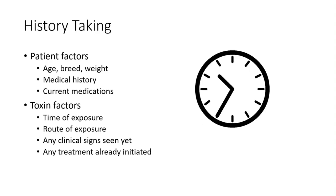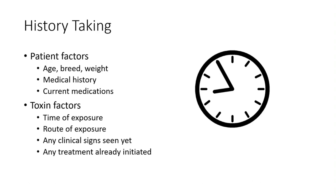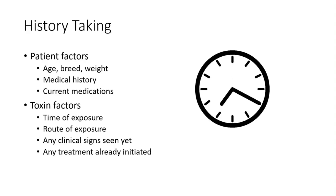When it comes to the actual toxin-specific factors: time of exposure is the obvious one — how long since ingestion affects how we choose to decontaminate. What was the route of exposure — oral or topical? That decides our decontamination process. What clinical signs have we started seeing? That can clue us into how much has been absorbed or how severely they're affected, and gives us some prognostic information. Also, has the owner already started any treatments at home, like hydrogen peroxide?